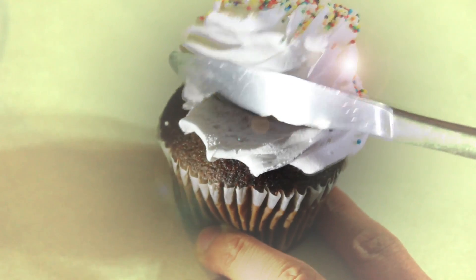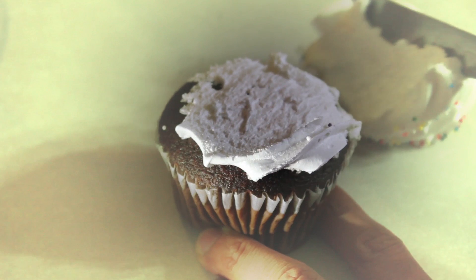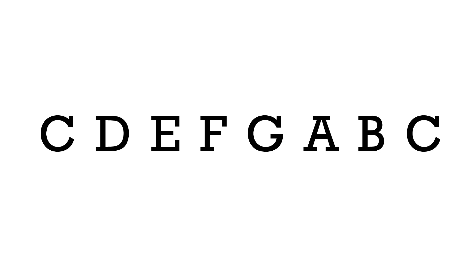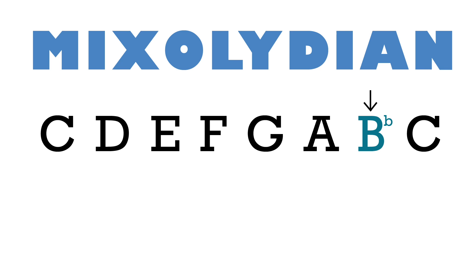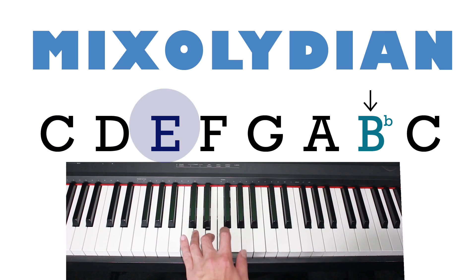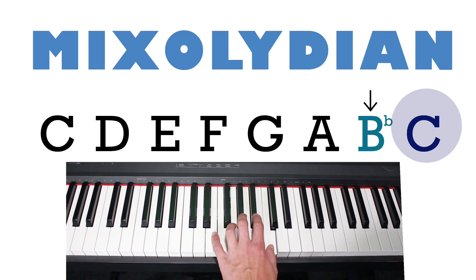Now if I wanted to scrape off some of that frosting and take away some of the sweetness of the scale, I could bring in Mixolydian. All I have to do is take my major scale and flat the seventh note — that means to lower it one half step. Now this already sounds a little less happy and more interesting, but the real magic happens when we use the chords available to us using these seven notes. By putting them together we get progressions like these.